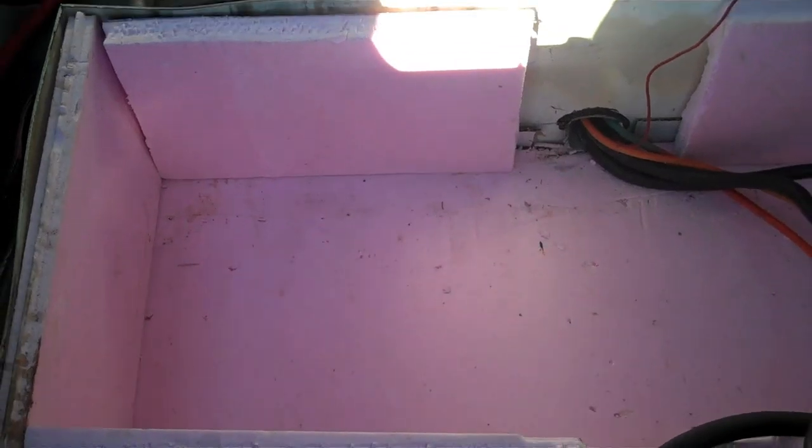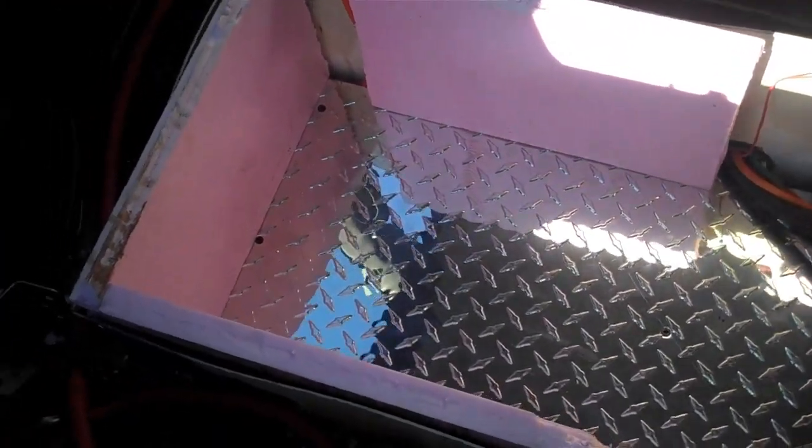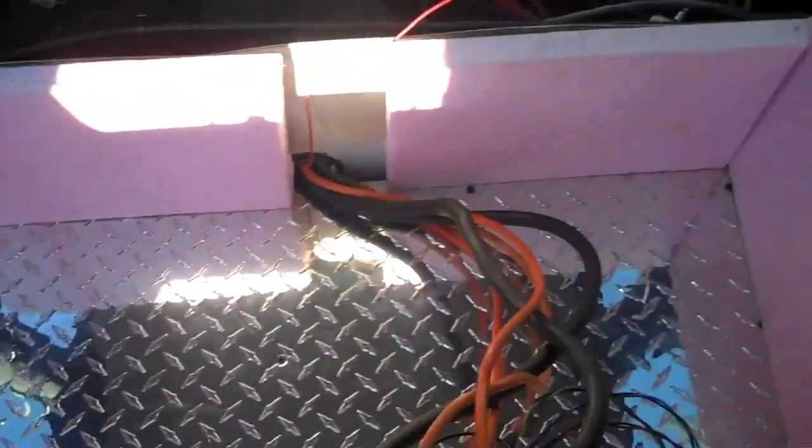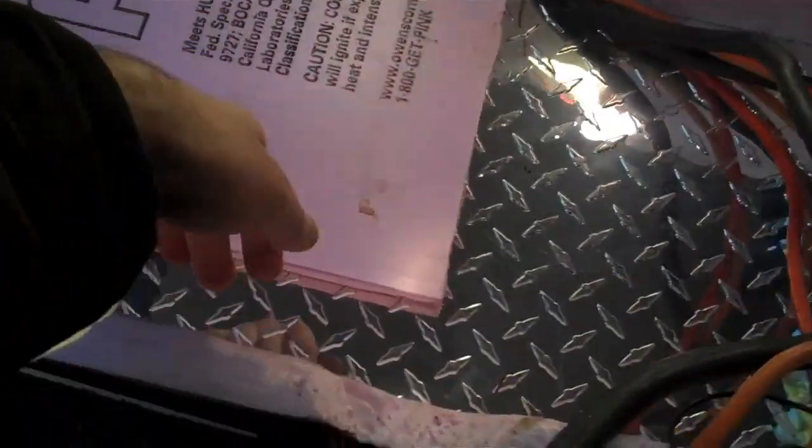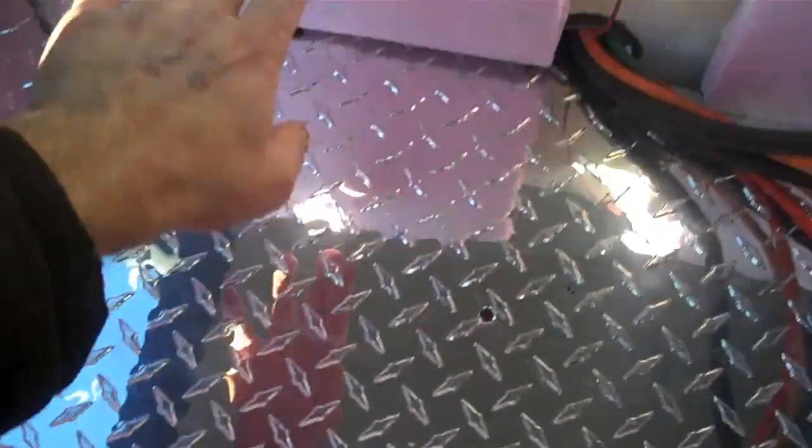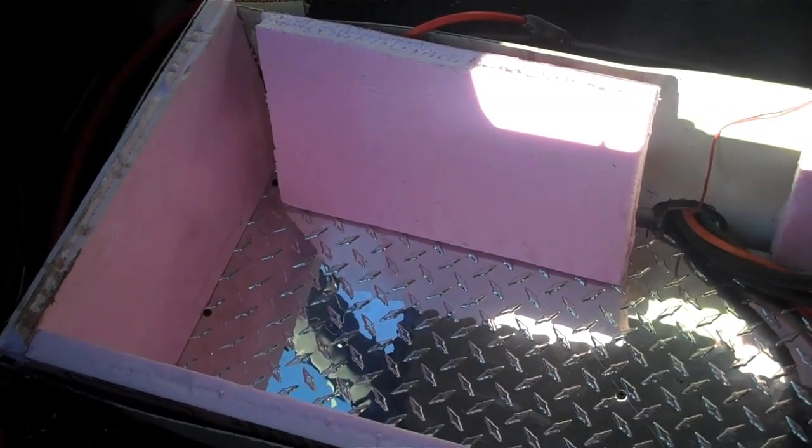Here I got the battery warmer down into the bottom of the box and the pink foam insulation is around the outside edges of it, obviously not actually held in by anything yet. Once the batteries are in, they just kind of fit right in there and hold everything in place.